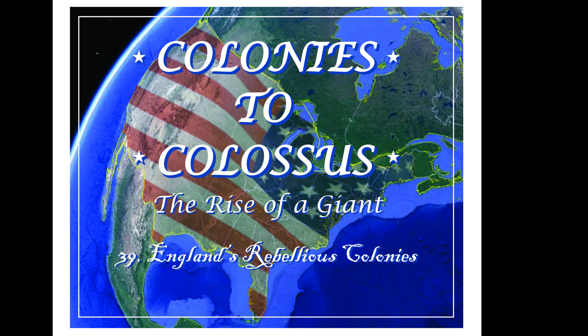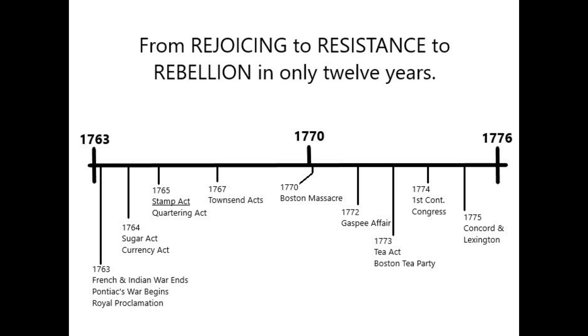But before we dive into the trees, I thought it would be a good idea to get a look at the whole forest first. So in this podcast, we're going to look at the big picture — why the colonists revolted against their mother country. On the screen right now is a little timeline. I thought this might help give a better idea of how quickly things deteriorated and how the whole situation unravels to the point where the British colonists go from rejoicing in 1763 at the end of the French and Indian War to wanting to separate themselves from Great Britain 12 years later in 1776.